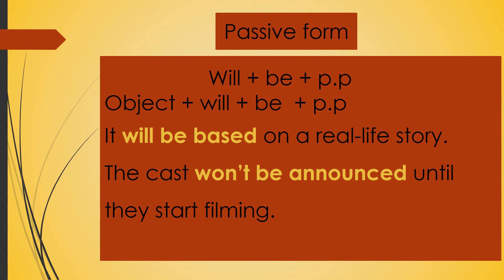For example: 'It will be based.' In the future passive, all pronouns and objects take 'will' — unlike present perfect where singular takes 'has' and plural takes 'have', or simple past where singular takes 'was' and plural takes 'were'. In future passive, all subjects take 'will'. For the negative: 'The cast will not be announced until they start filming.' Will not للnegative, will للaffirmative.